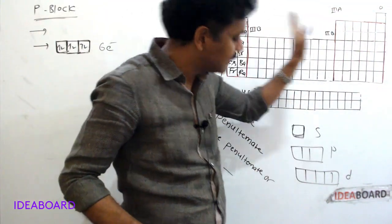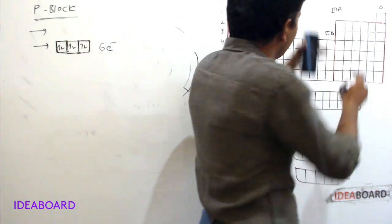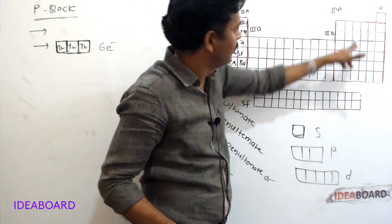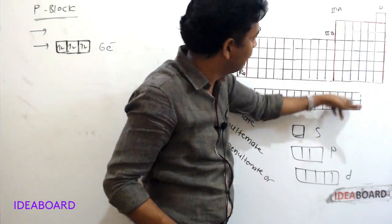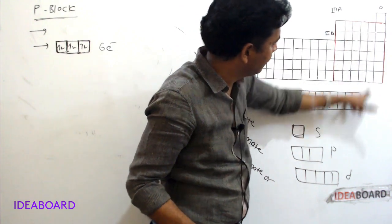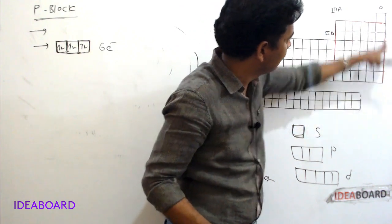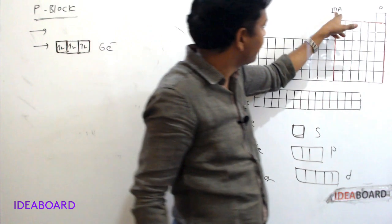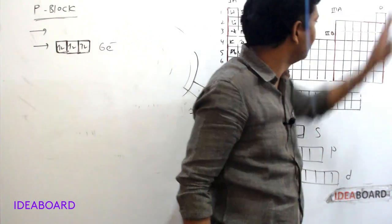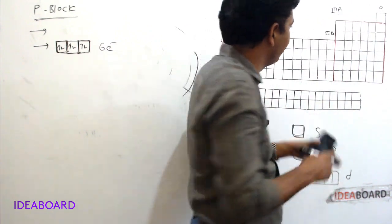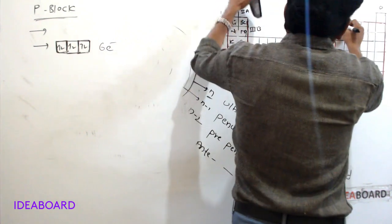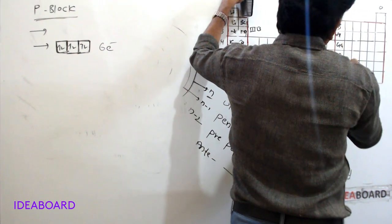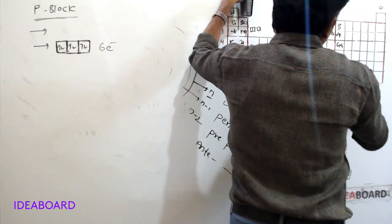P block contains 6 groups: third A, fourth A, fifth A, sixth A, seventh A, and zero group. Third A group elements are boron, aluminium, gallium, indium, thallium, and nihonium. Fourth A group elements are carbon, silicon, germanium, tin, lead, and flerovium.